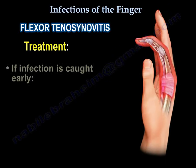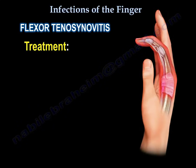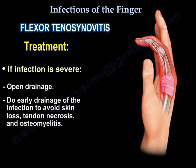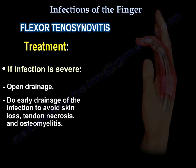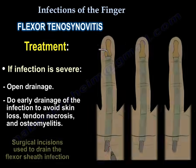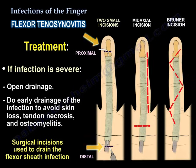Treatment: if the infection is caught early, it can be treated with IV antibiotics. If the infection is severe, you need to perform open drainage. Early drainage is essential to avoid skin loss, tendon necrosis, and osteomyelitis. Here you can see a picture of the surgical incisions used to drain the flexor sheath infection.